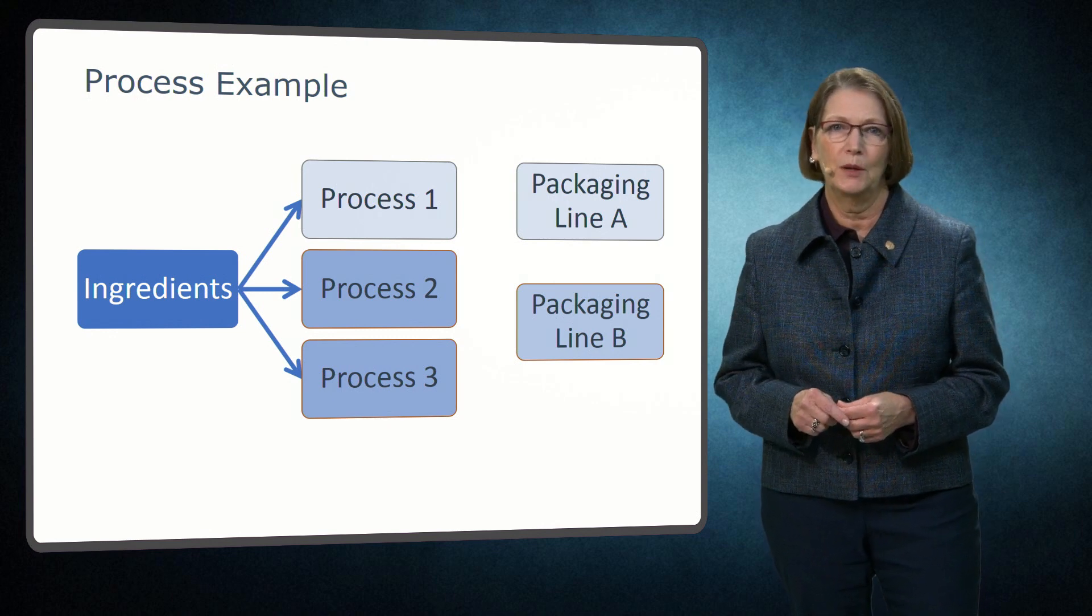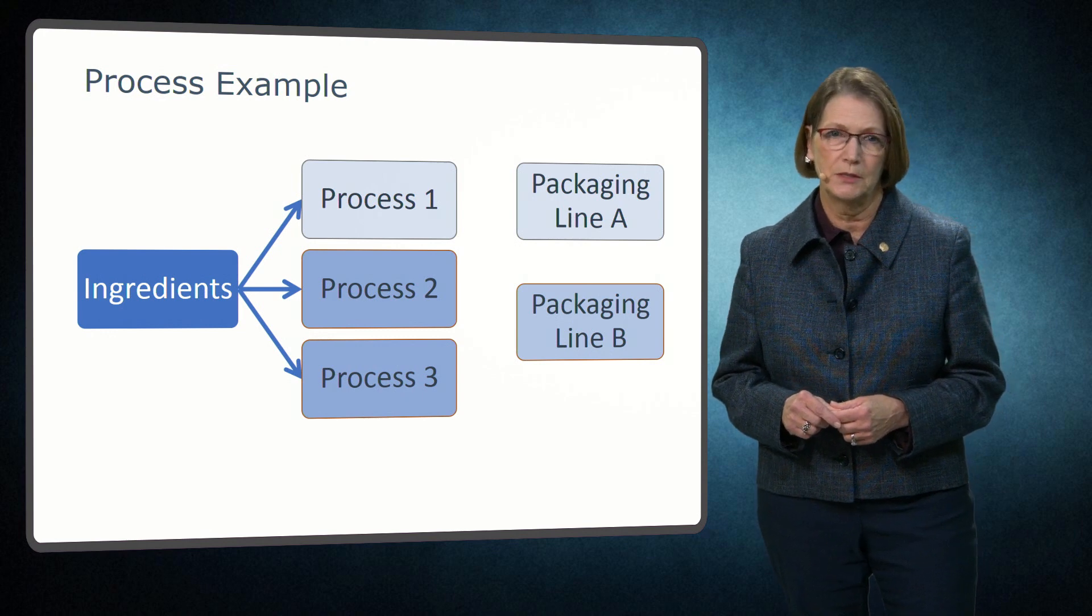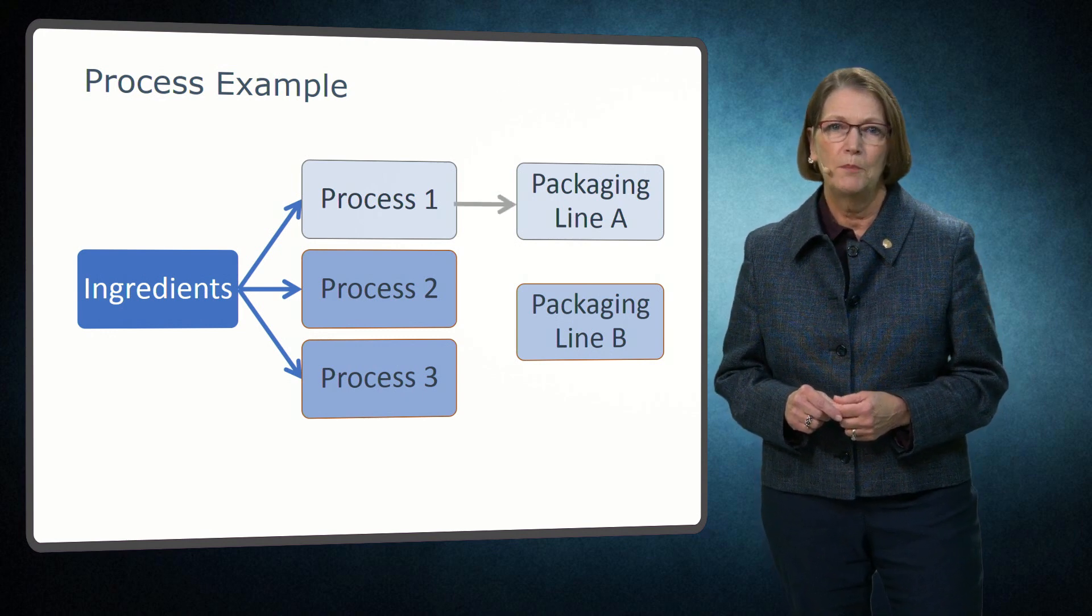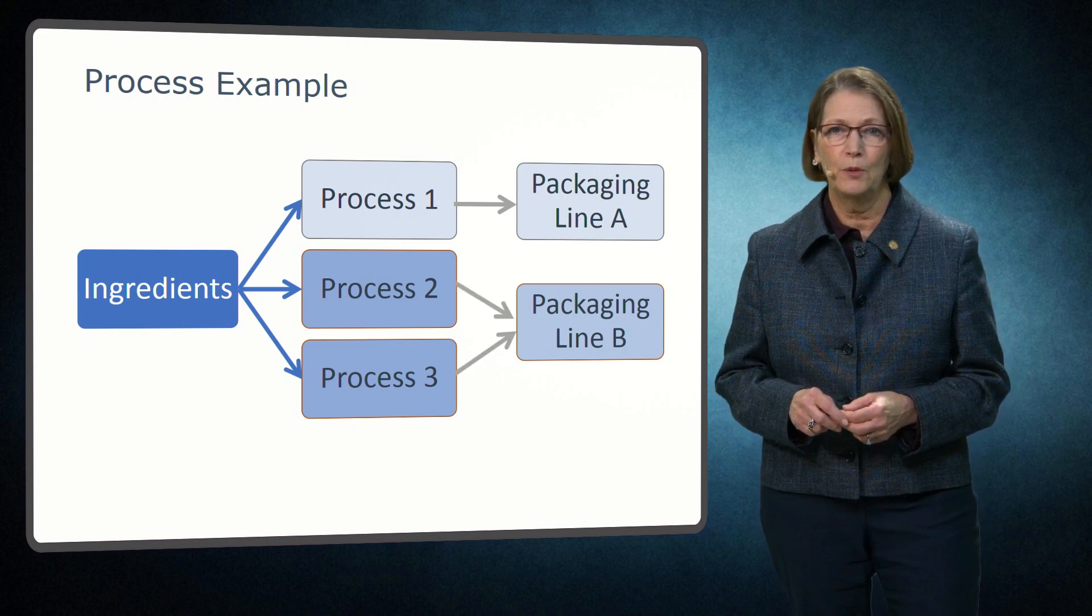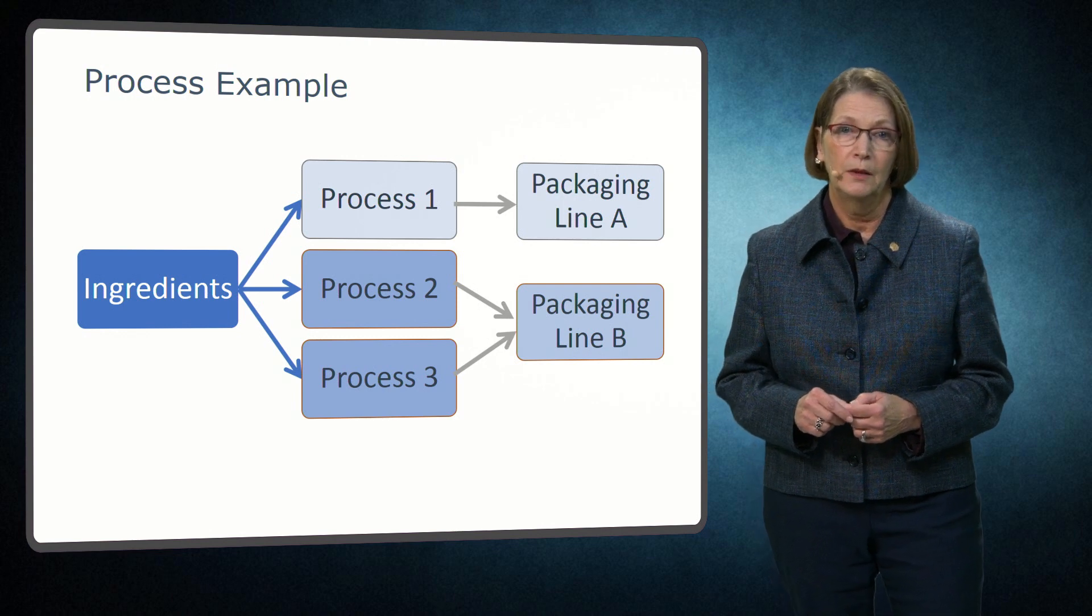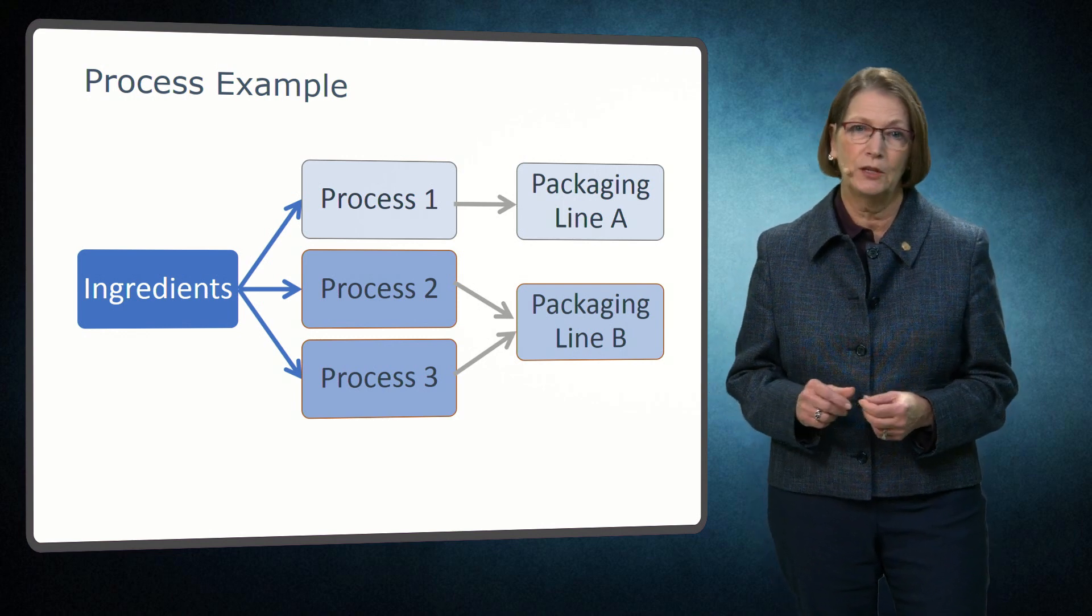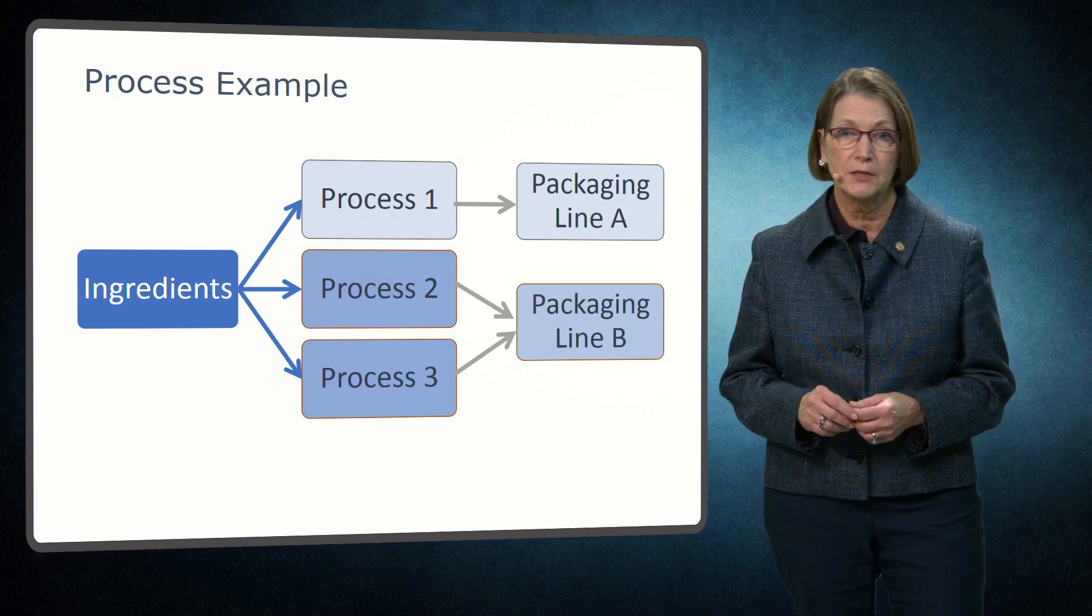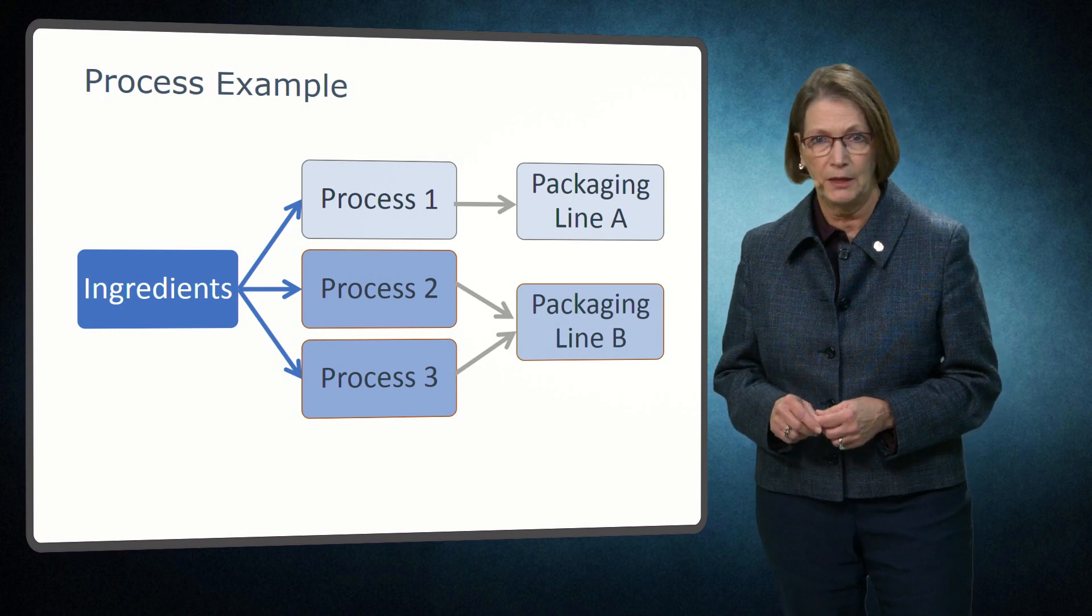In this hypothetical example, common ingredients are used for three different processes. Process 1 makes product for packaging line A, while the products from processes 2 and 3 are packaged on line B. The company conducts verification testing on each of these two packaging lines to monitor trends between lots and demonstrate that the processes are performing as expected.